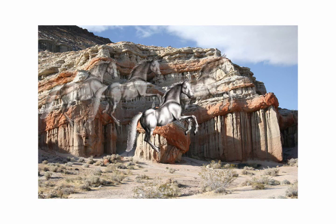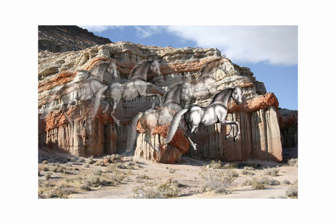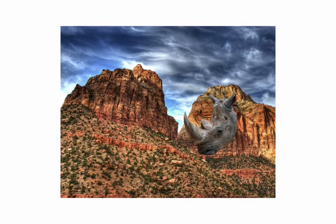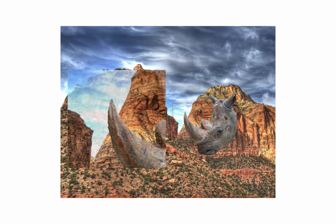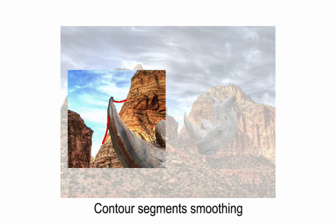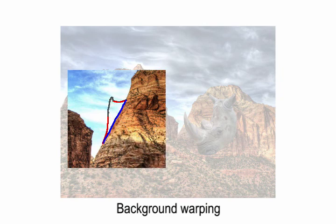For more details, please see our paper. We provide background warping to hide camouflage protrusion of the foreground. When parts of the foreground protrude out unnaturally, our system automatically detects contour segments with high curvature variation, smoothes these segments, and then applies a subtle image warping to fit the background border to the smooth figure contour.